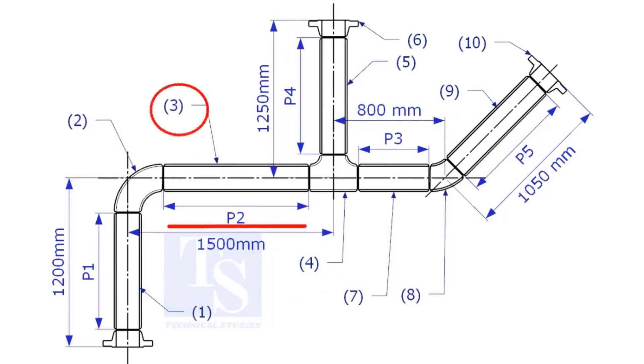Let us calculate the length of item number 3. We already know the takeoff length of the 6 inch long radius elbow. Now, check the chart for the takeoff length of the equal tee.